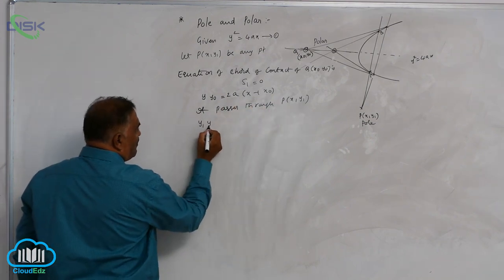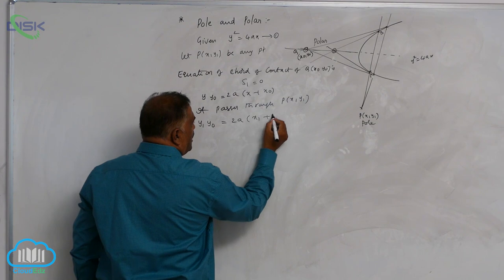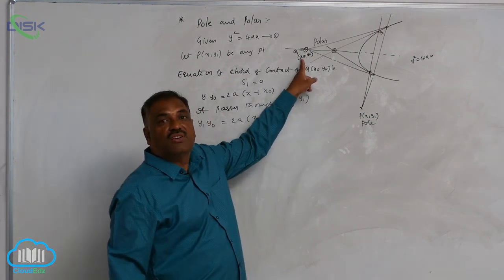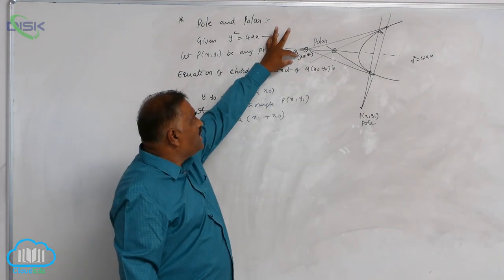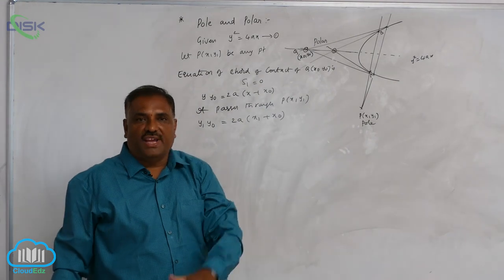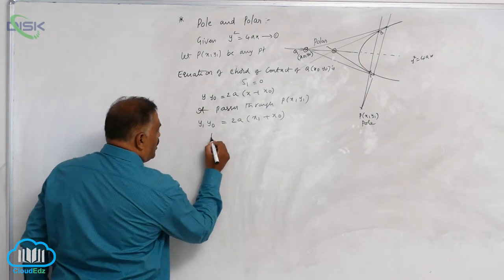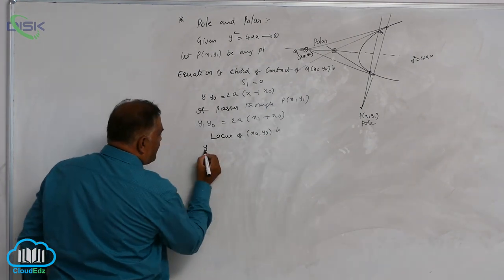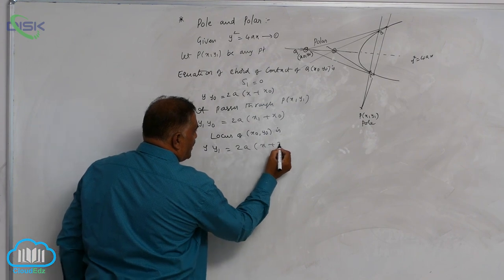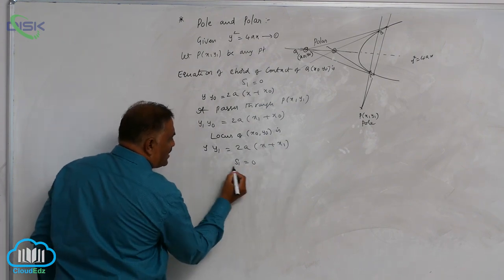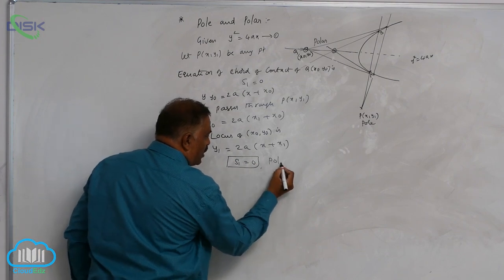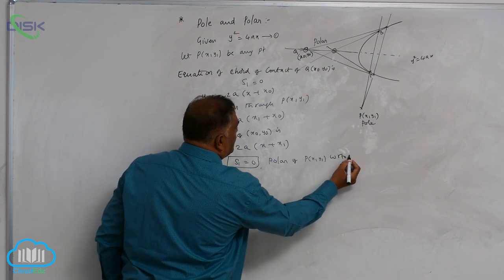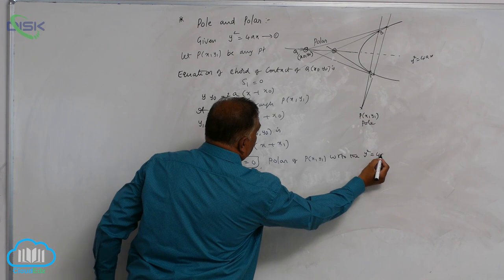Substituting P into the chord of contact: y₁·y₀ = 2a(x₁ + x₀). We require the locus of Q(x₀, y₀), so we replace x₀, y₀ by general coordinates. The locus of Q(x₀, y₀) is y·y₁ = 2a(x + x₁), which is S₁ = 0. This is the polar of P(x₁, y₁) with respect to the parabola y² = 4ax.